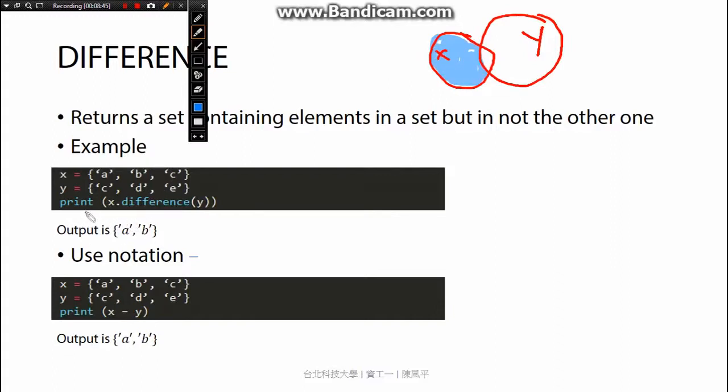So when we print x difference y, we'll have a, b but not c, because c is the intersection of x and y. Otherwise, we can use the notation minus. So x minus y will go to a, b.